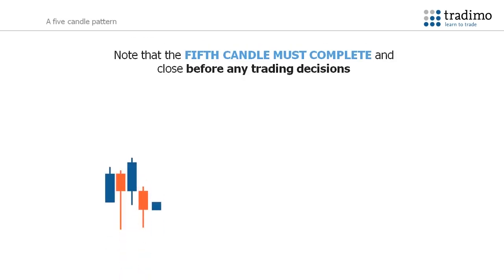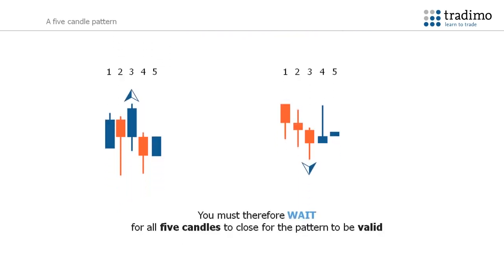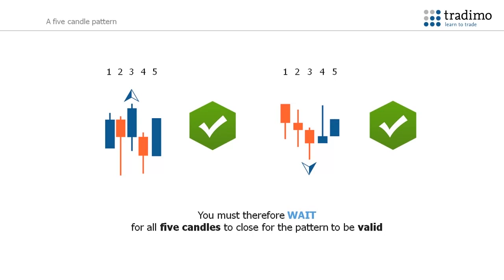Because a fractal is a five candle pattern, it is very important to note that the fifth candle must complete and close before the fractal can be used to make any trading decisions. If the fifth candle is not closed, price could easily move above the highest high or below the lowest low, invalidating the potential fractal and causing the fractal indicator to disappear from the chart. You must therefore wait for all five candles to close for the pattern to be valid.